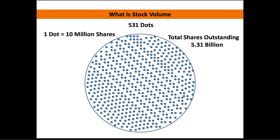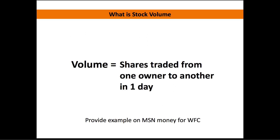Inside of this circle, let's imagine it represents the entire company of Wells Fargo, and each one of those dots is symbolic of a share. I have 531 dots inside of this circle, meaning each dot represents 10 million shares — which is a lot of shares. But there are 5.3 billion total shares inside of that circle.